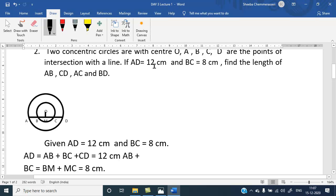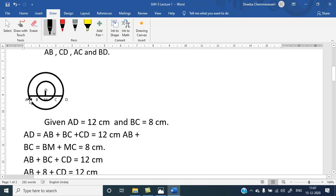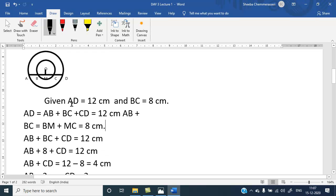Coming to the next question. Two concentric circles are with center O. A, B, C, D are the points of intersection with a line. If AD is 12 cm and BC is 8 cm, find the length of AB, CD, AC and BD. Given AD is 12 cm and BC 8 cm. We have to find the rest.